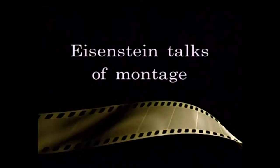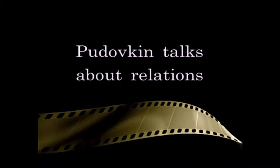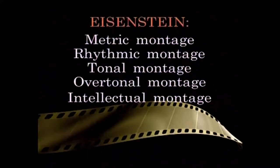Eisenstein concentrated on montage and Pudovkin on relations. Now let me ask you to name the five kinds of montage that Eisenstein has spoken of. Metric montage, rhythmic montage, tonal montage, overtonal montage, intellectual montage. Absolutely correct. That's excellent.